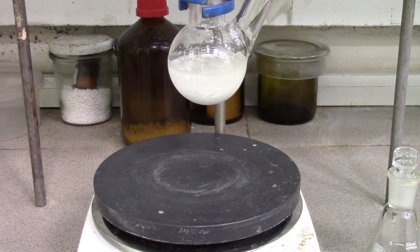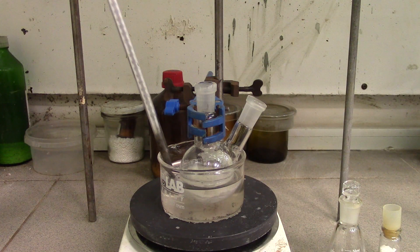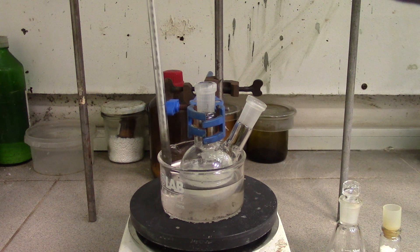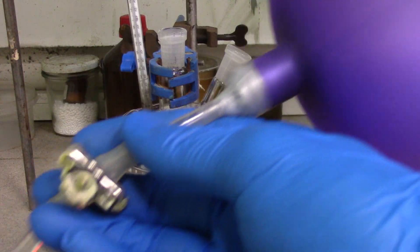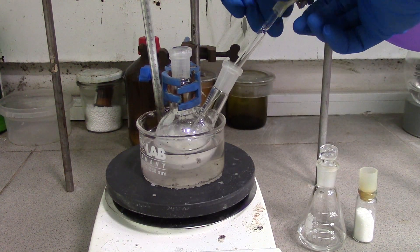Thereafter, I put the whole construction into a silicon oil bath for even heating. Of course, controlling temperature. Now it needs to be aerated by argon or nitrogen with vigorous stirring during 30 minutes at 60 degrees C.